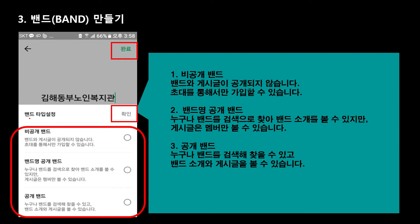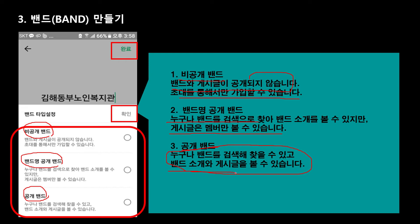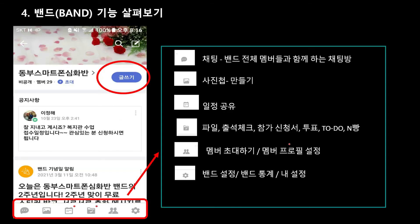밴드 타입 설정을 보면 비공개 밴드가 있고요. 밴드명 공개 밴드가 있고요. 공개 밴드가 있습니다. 비공개 밴드는 게시글이 공개되지 않고 초대를 통해서만 가입할 수 있고요. 밴드명 공개 밴드는 누구나 밴드는 검색할 수 있는데요, 게시글은 멤버만 볼 수 있습니다. 공개 밴드는 모든 걸 오픈하는 거죠. 다 검색할 수 있고 다 볼 수 있습니다. 넣고 완료하시면 됩니다.